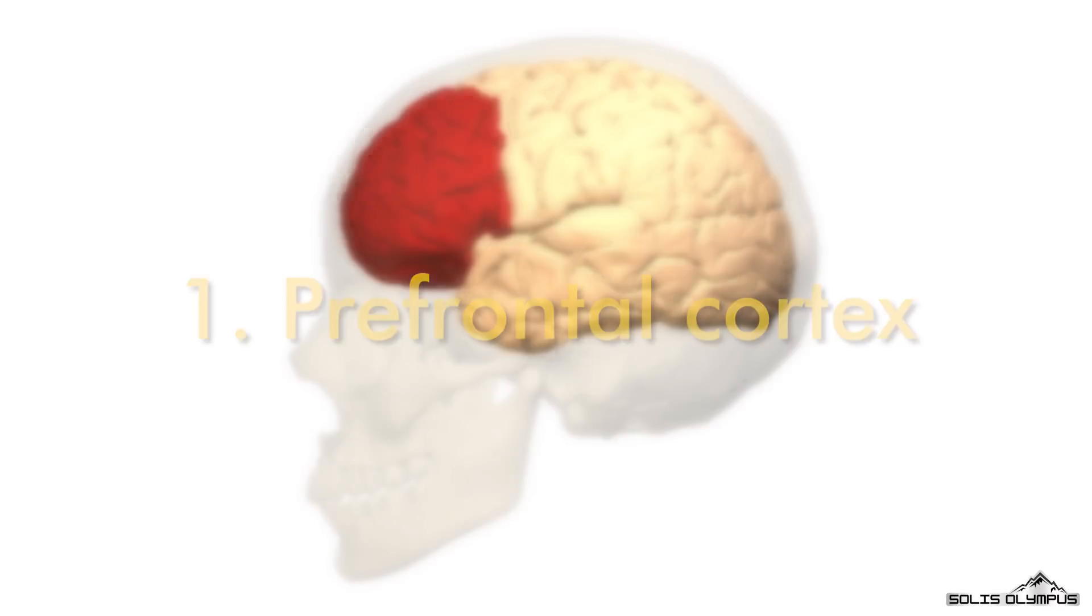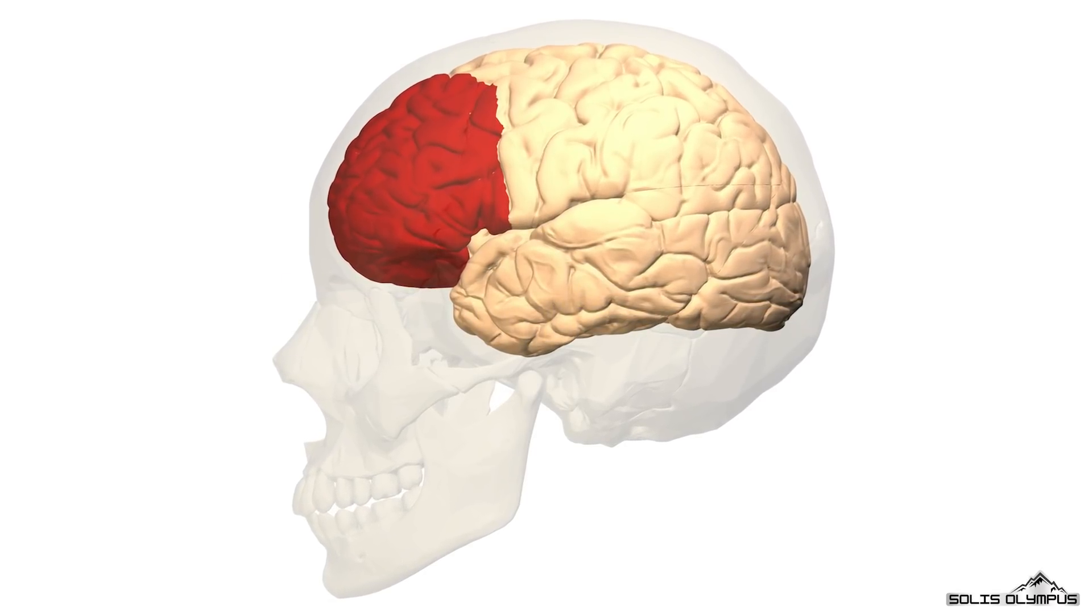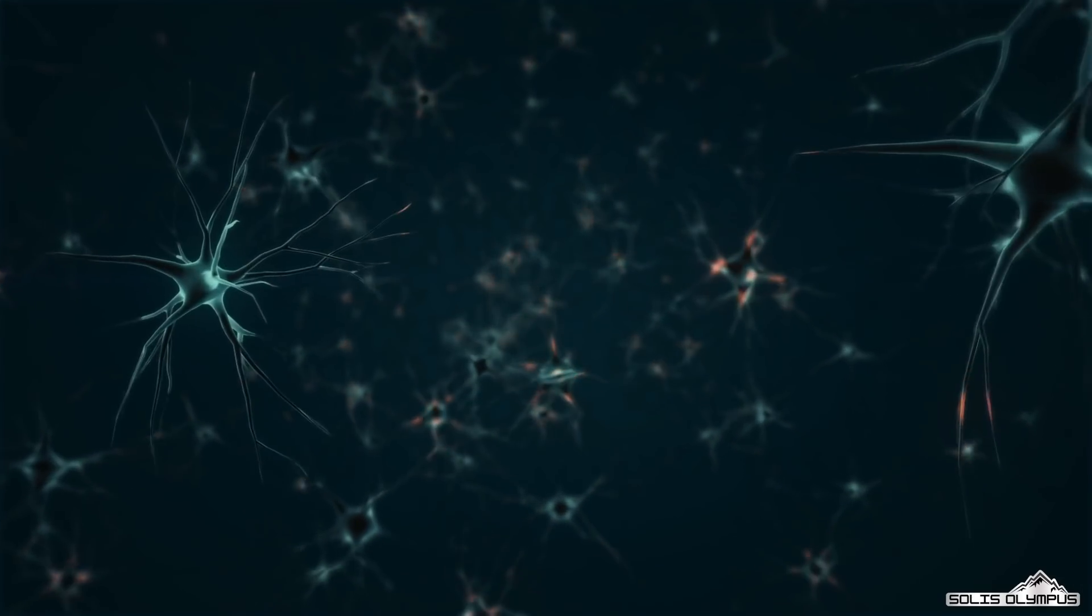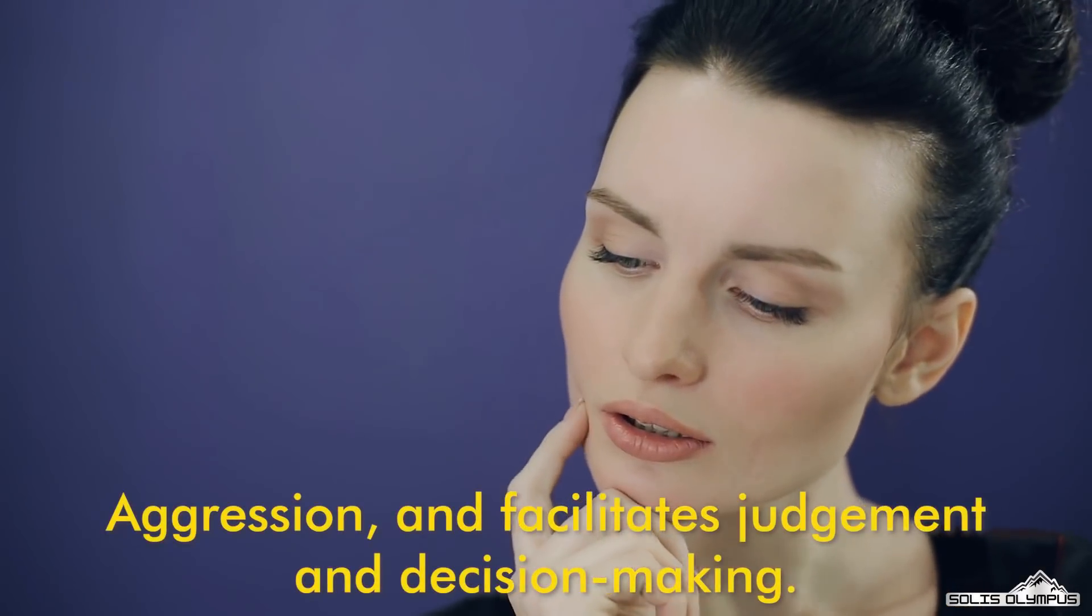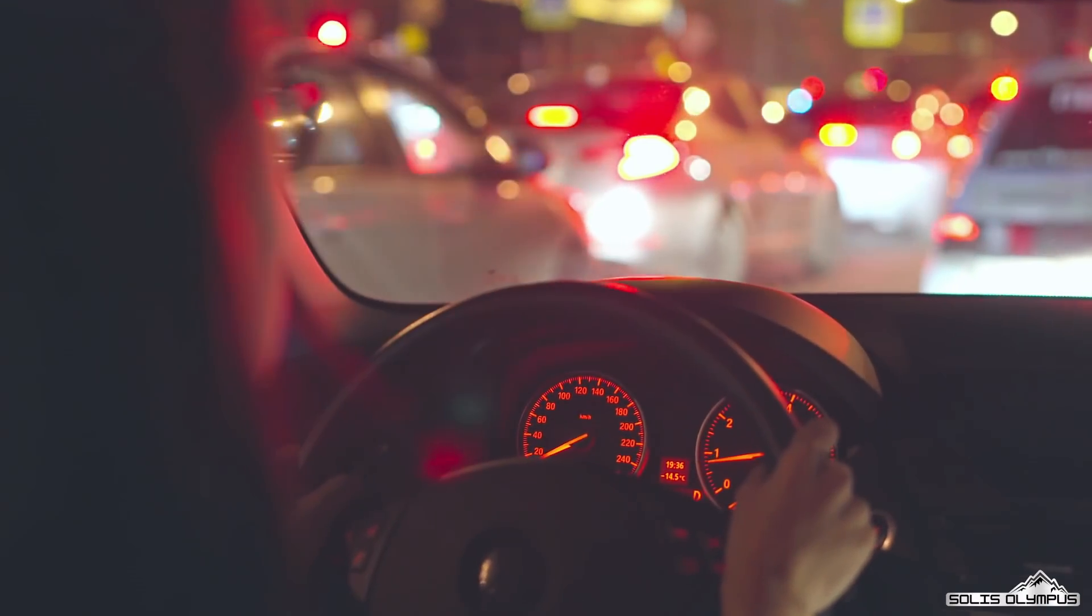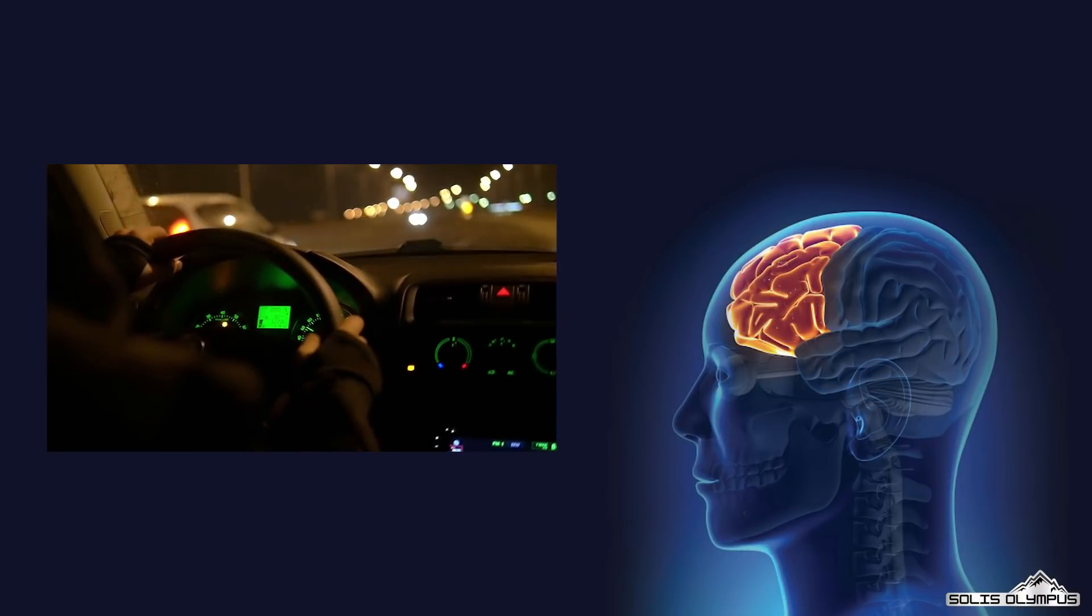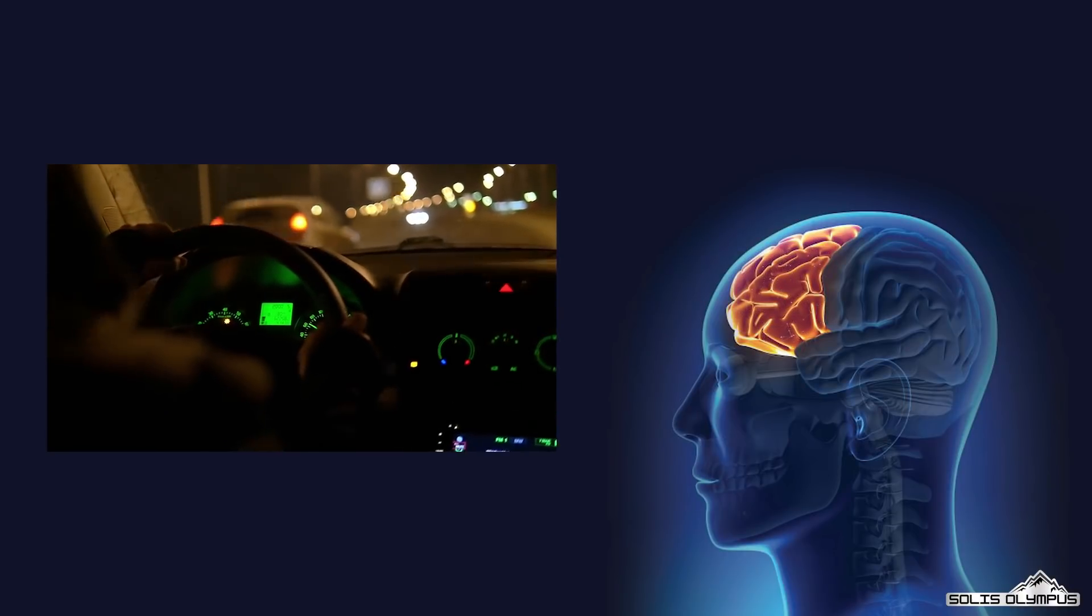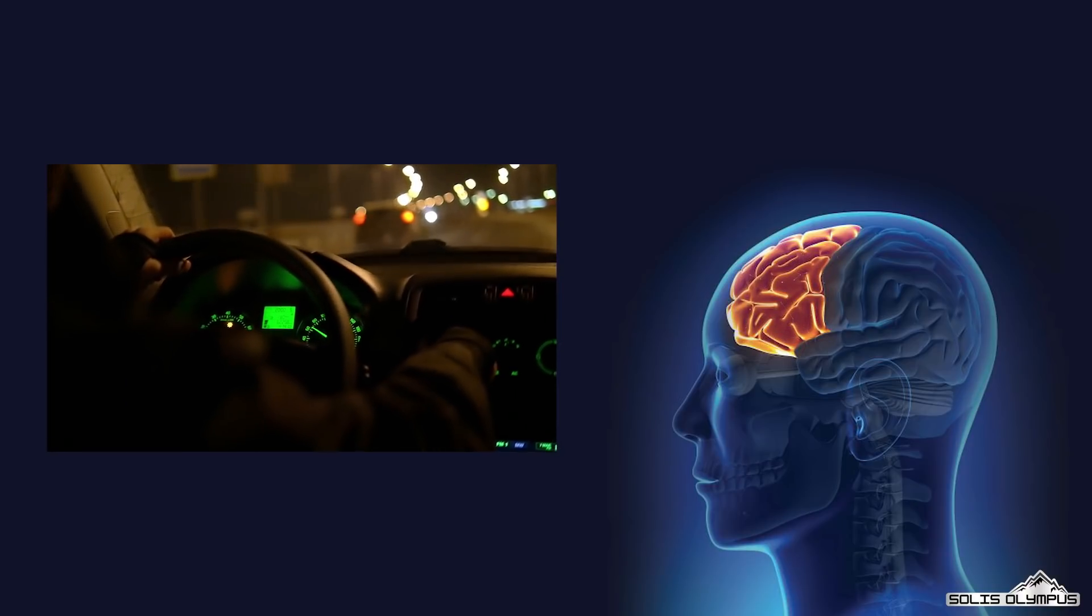The prefrontal cortex is a part of the brain located at the front of the frontal lobe. It plays a crucial role in the processing of intellectual and emotional information, including aggression, and facilitates judgment and decision making. For example, if you are driving a car in a congested area, you will have to interpret a lot of information in a short period of time, which requires your prefrontal cortex to be very active in order to assist you in judging the road and making decisions at every step of the way.